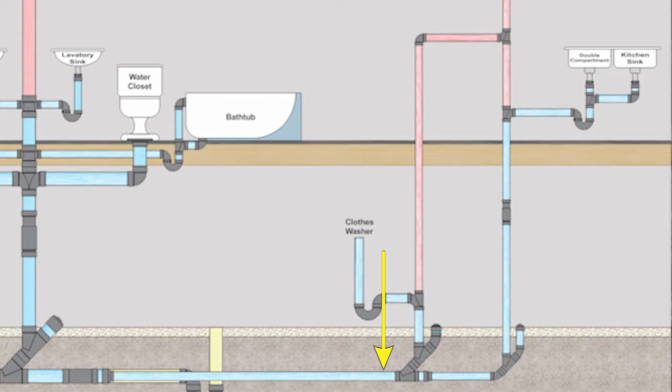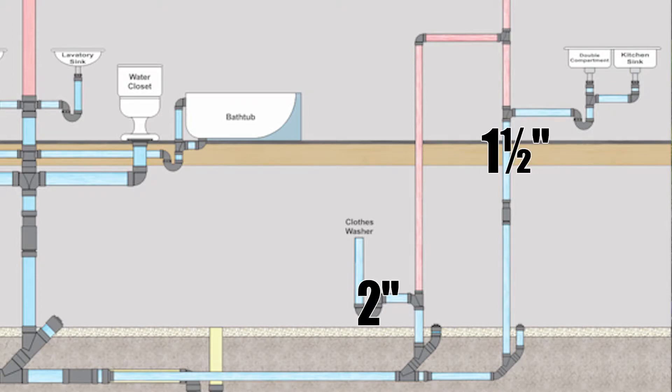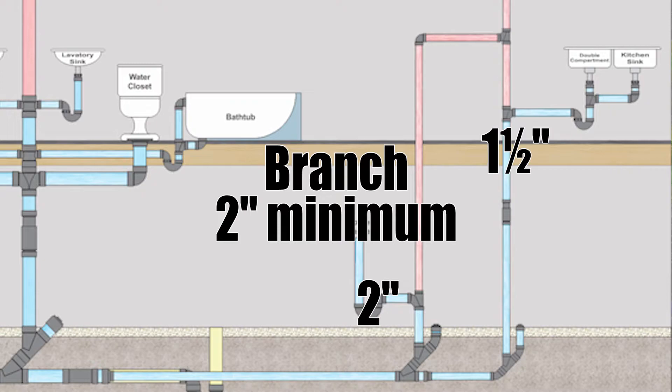Now this pipe right here is the result of two or more soil waste pipes joining together. Therefore we call it a branch. Now technically we need to use tables to size a branch but I said we're gonna keep it simple. I've got a two inch clothes washer and a one and a half inch kitchen sink. We are gonna have a two inch branch here.